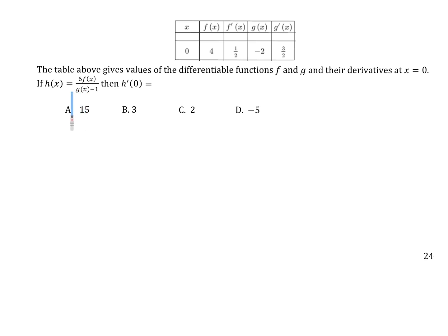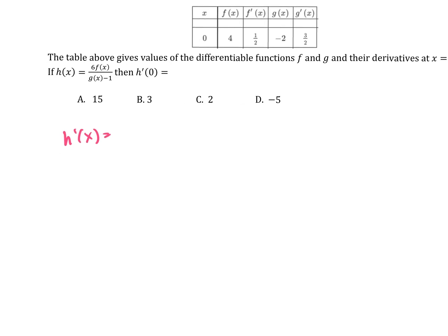I'm going to give you two and a half minutes to try this one on your own — give it a shot. Let's just talk about what H prime of X is — the derivative of this guy. What's low? You just always take the lower function — G of X minus one, that's low. D high — be careful. Six F of X is the same as six times F of X. The derivative of that higher? It will involve an F prime. It is six F prime.